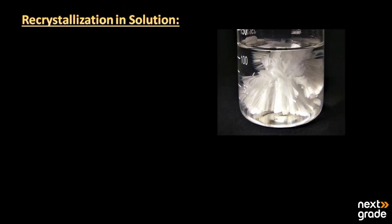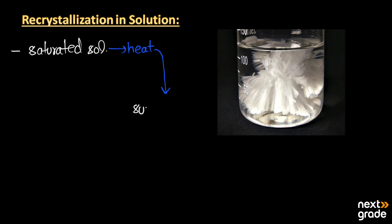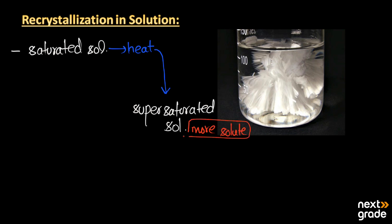Next, we have recrystallization in the solution — how recrystallization starts. For example, first we have a saturated solution, and we increase the temperature by heating it. Upon heating, it converts into a super saturated solution by dissolving more solute. At that point it is having more solute. You must keep in mind that the saturated solution has less solute and the super saturated solution has more solute.